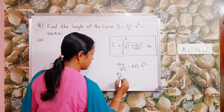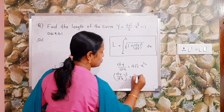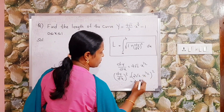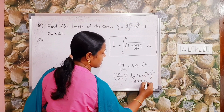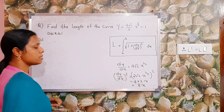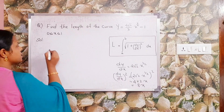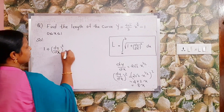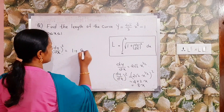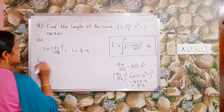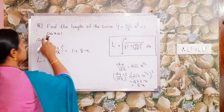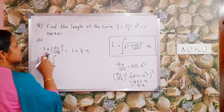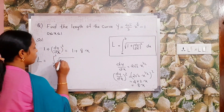Next, (dy/dx)² = (2√2·x^(1/2))² = 4·2·x = 8x. So 1 + (dy/dx)² = 1 + 8x. Therefore L = integral from 0 to 1 of √(1 + 8x) dx.